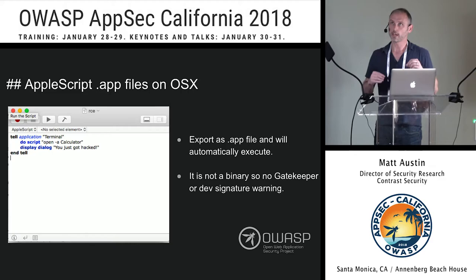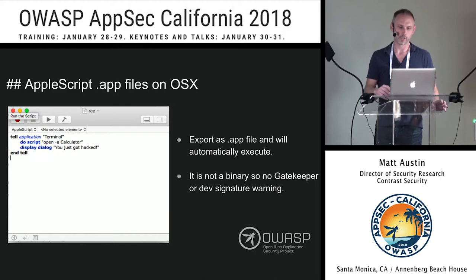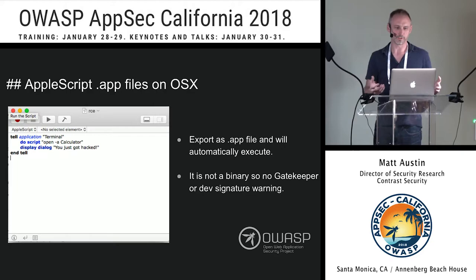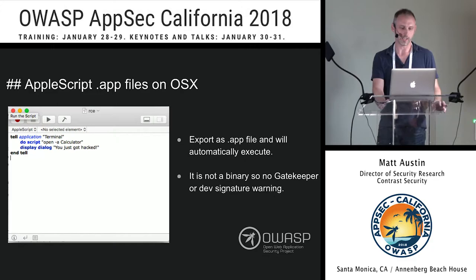It turns out you can create a .app file — a standard Mac OS application file — by writing AppleScript. When you compile that in the AppleScript editor, you can do anything in there since it's just a basic scripting language. When you export it as an app file, it's not actually creating a binary — it's creating an app, just a package executing your AppleScript. It opens automatically but there's no signed binary, no permission issues or anything else, because it's not actually an executable — it's not a binary. It just happens to open automatically and execute your script.